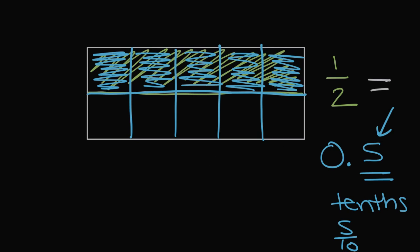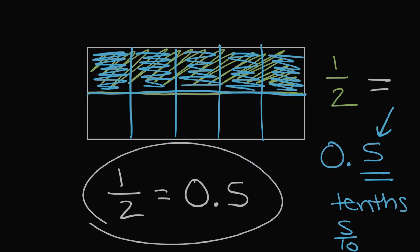So we've shown two ways now. One half and five tenths were at the same spot on a number line, which means they're equal. And they cover the same amount of area, which is another way to show they're equal. So one half is definitely equal to 0.5, or five tenths.